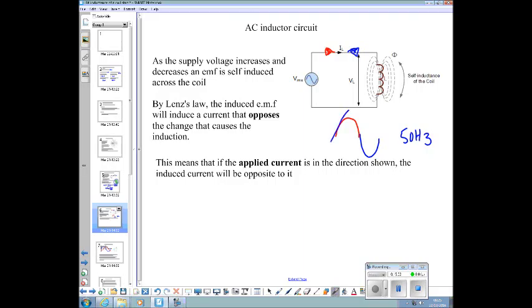What's causing the induction is the fact that the current in the circuit is changing. It is either rising or falling. So this induced EMF - if the current is flowing in the red direction, the induced EMF will be trying to send the current back in the other direction. It will be opposing it, restricting it, holding it back, like resistance. It's an opposition to current flow. This means that if the applied current is in the direction shown, the induced current will be opposite.